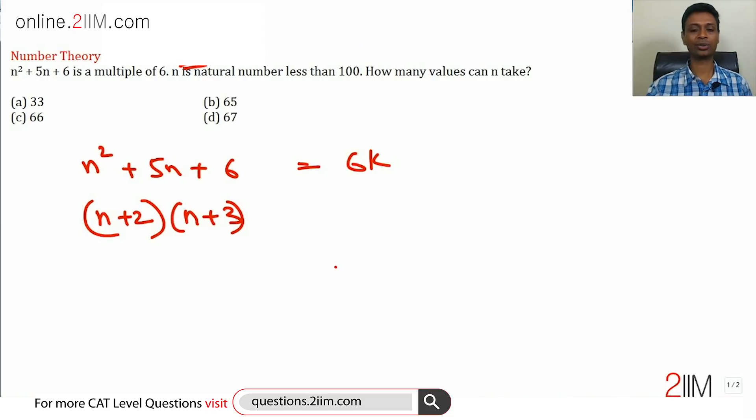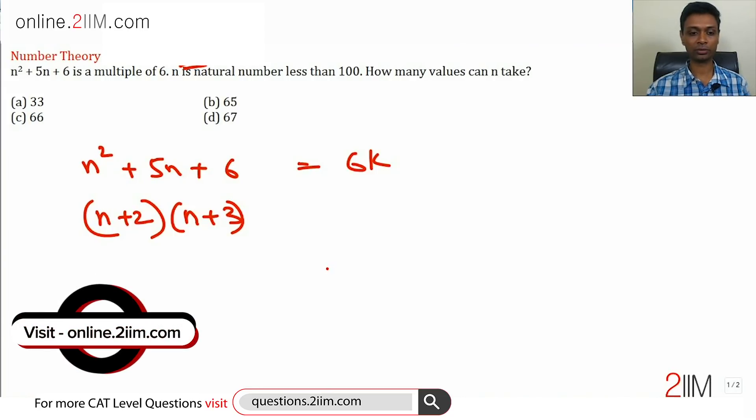Now to start with, if a number has to be a multiple of 6, it's got to be a multiple of 2 and a multiple of 3. Now any two consecutive natural numbers, one of them is going to be even, one is going to be odd. (n+2)(n+3) is definitely a multiple of 2, so all I need to do is worry about multiples of 3.